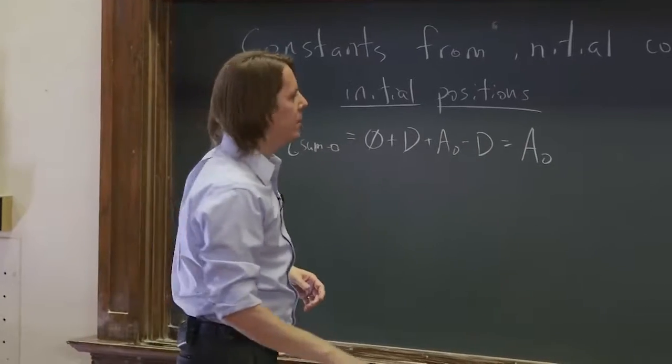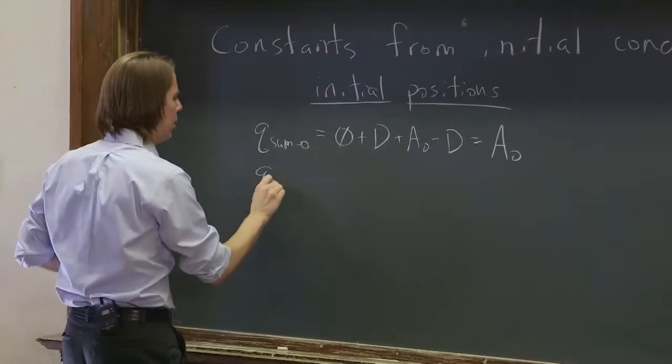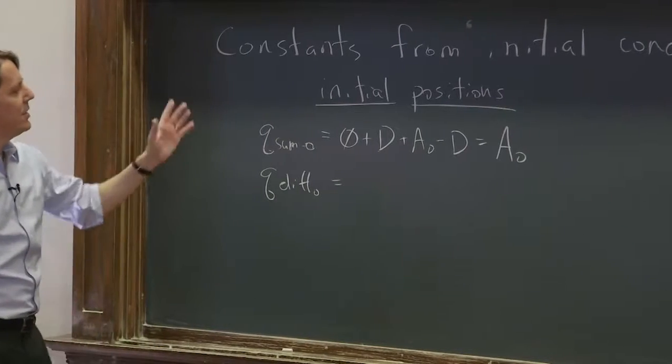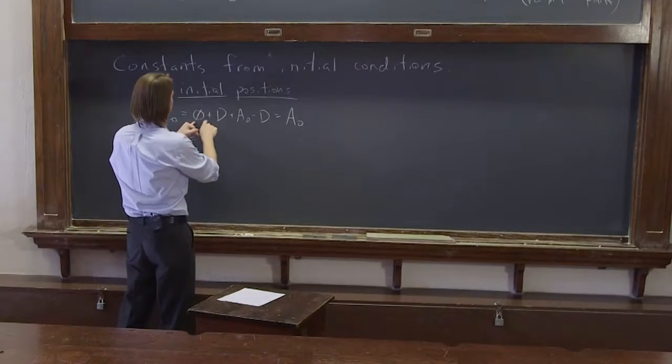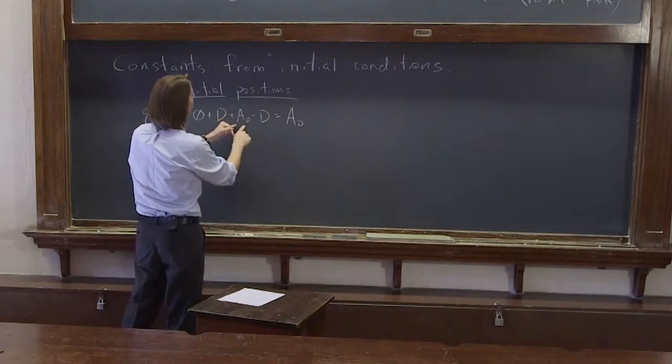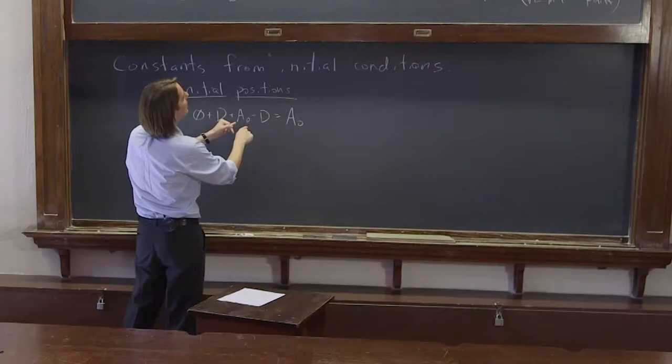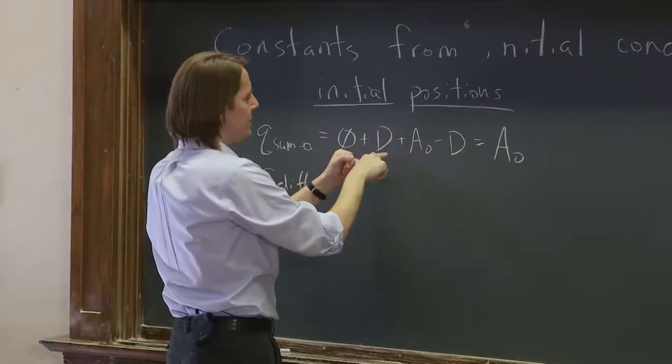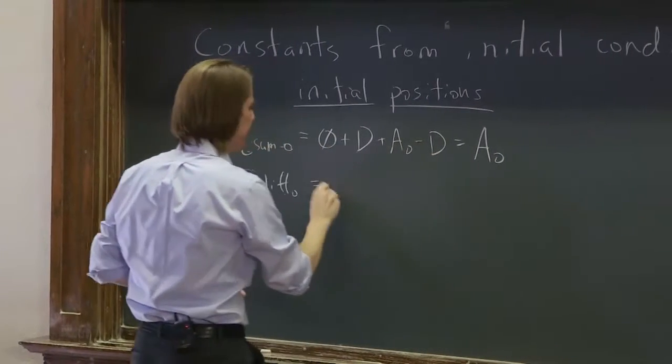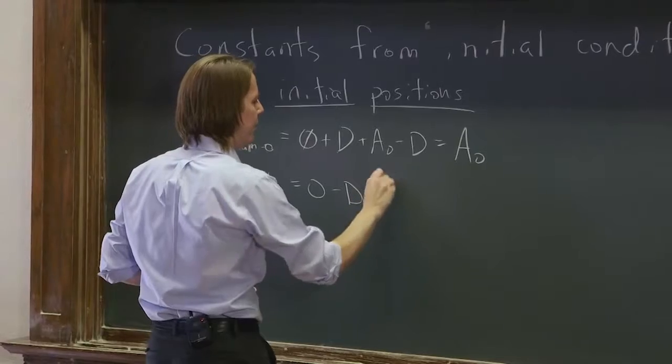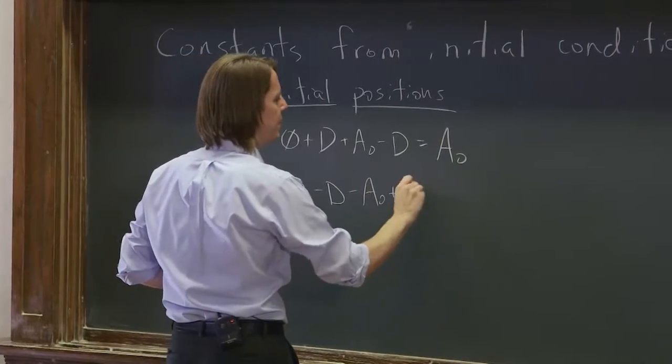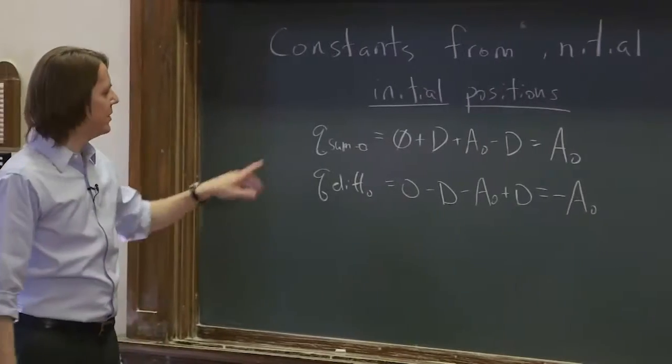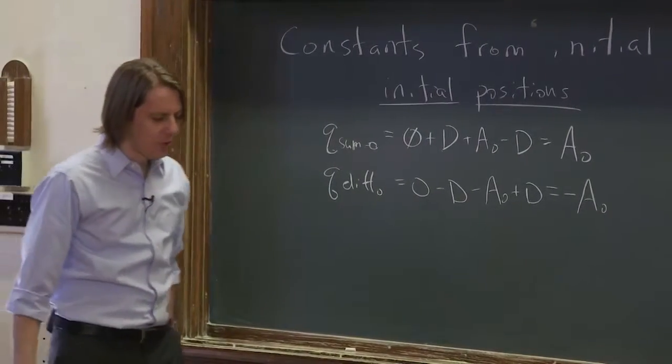And we could do q_diff_0. That's going to be one minus the other: 0 minus d minus A_0 plus d. So minus d plus d cancels, and we get minus A_0. That's the initial value of the difference normal coordinate.